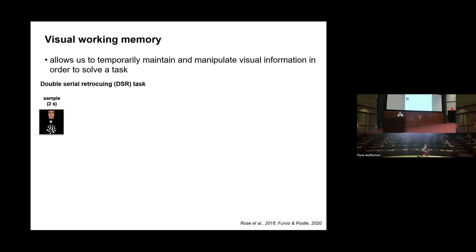It's called a double serial retrocuing task. We have a research participant come into the laboratory, sit at a computer, and focus their eyes on a white cross on the screen. Then they get to see two items, which we call a sample. In this case, the sample is comprised of a face image and a set of moving dots moving sort of up and to the right. We tell participants you need to remember the sample information because you're going to be tested on your memory later.